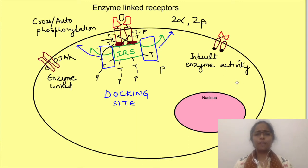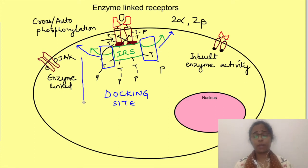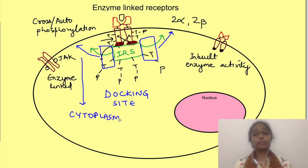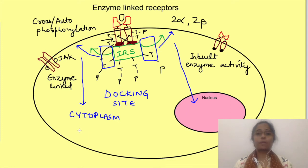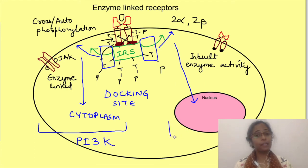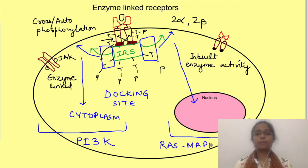After this a chain of reactions starts in which various kinases get activated for the downstream action to take place. Some of these kinases act on their targets in the cytoplasm and some can move into the nucleus. There are two fundamental signal transducing pathways by which insulin acts: the Phosphatidylinositol 3-kinase (PI3K) pathway and the Ras-MAP kinase pathway.